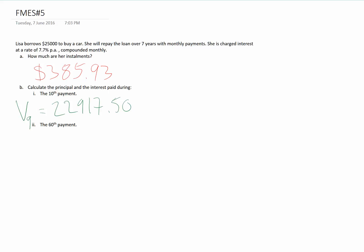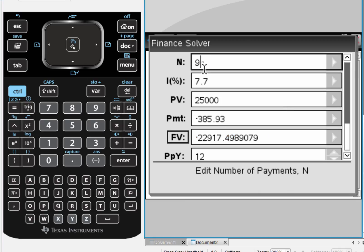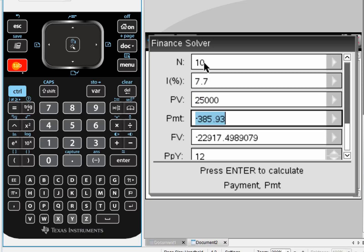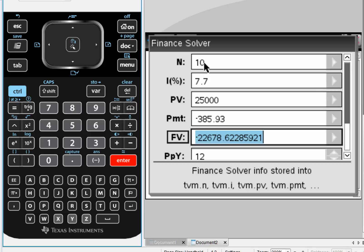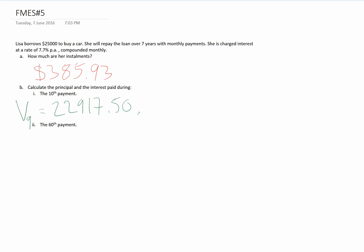We now need to go back and figure out how much does Lisa owe after she's made that 10th payment. How much does she still owe? In order to do that, we'll change N to 10 and recalculate the future value. She owes $22,678.62. So V10 is $22,678.62.